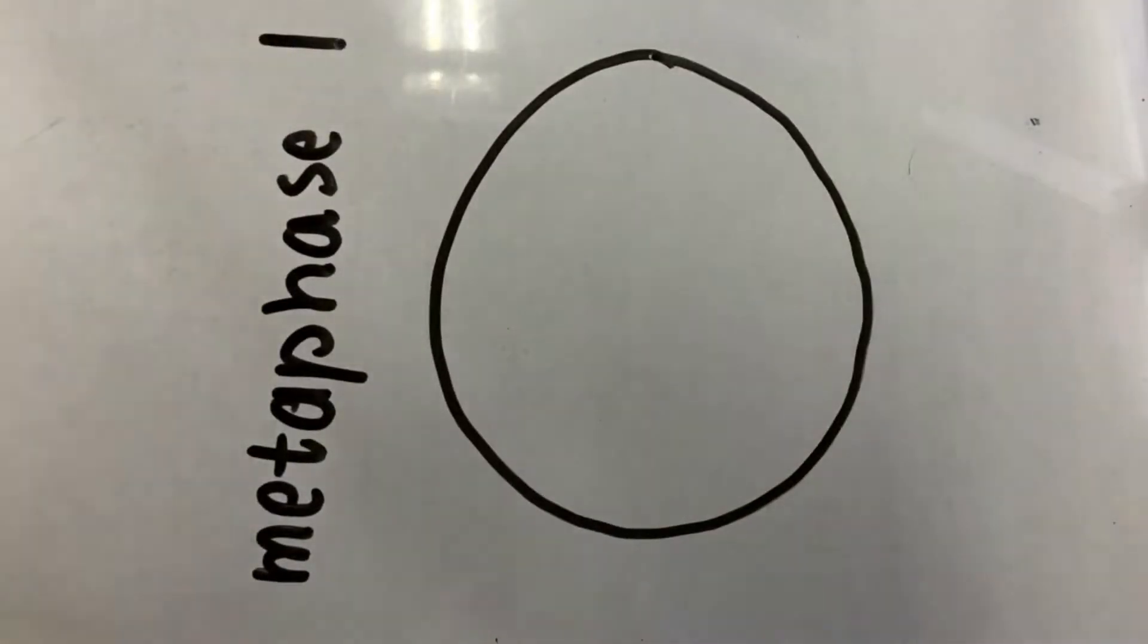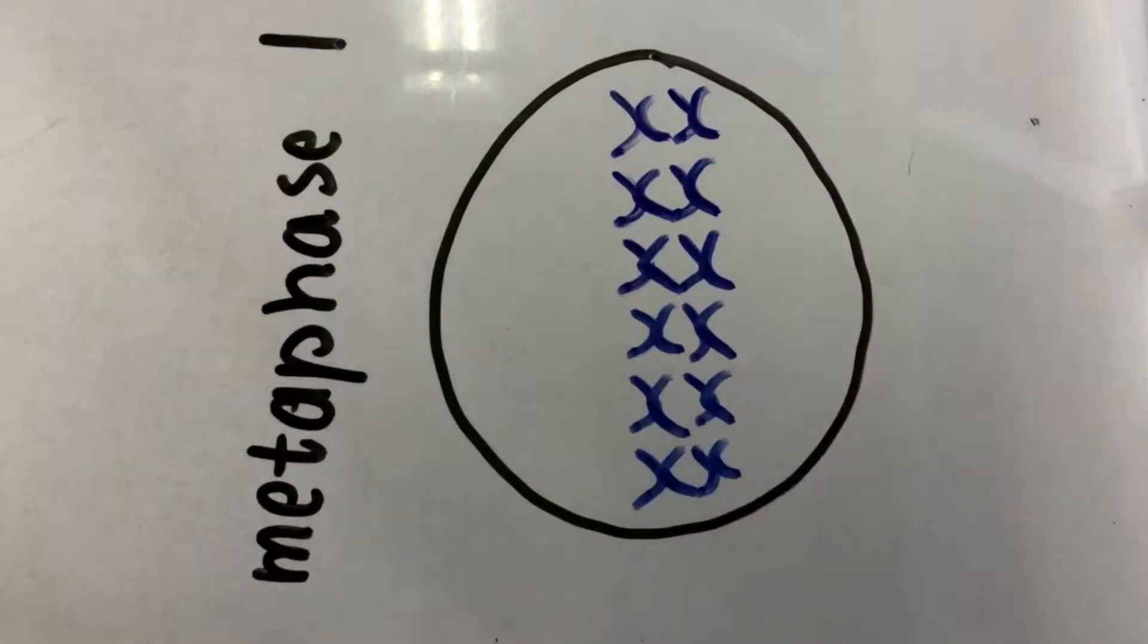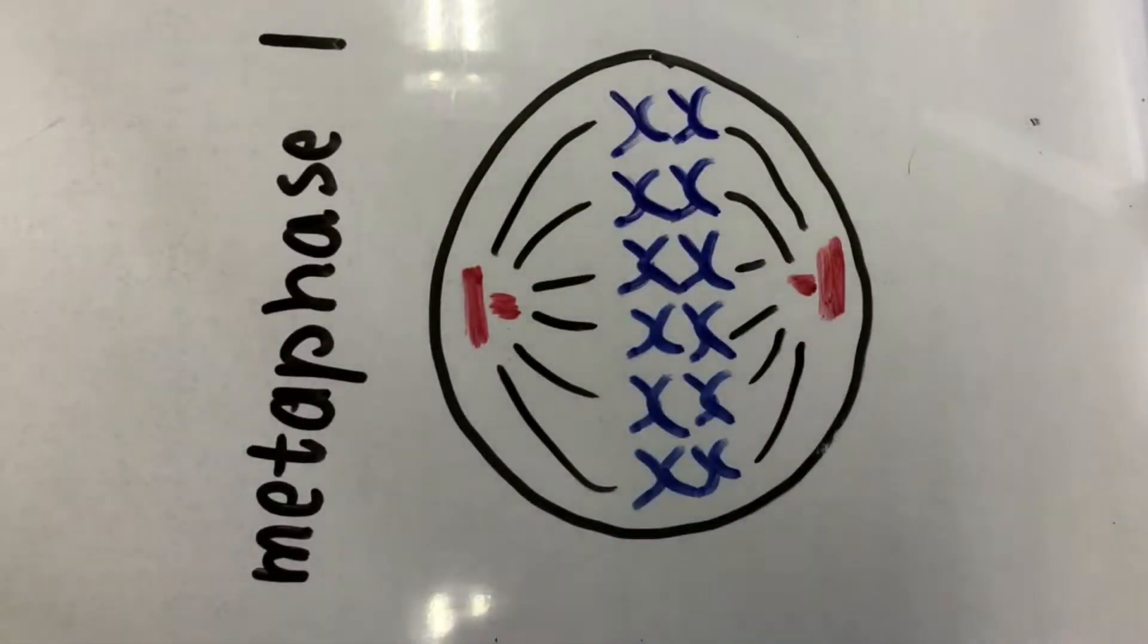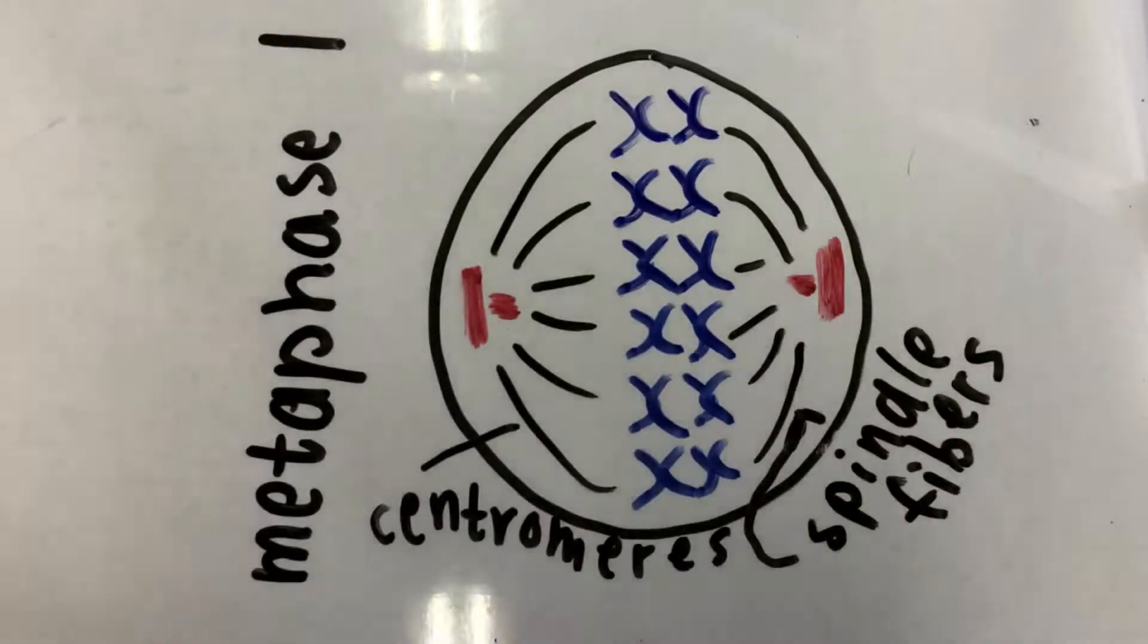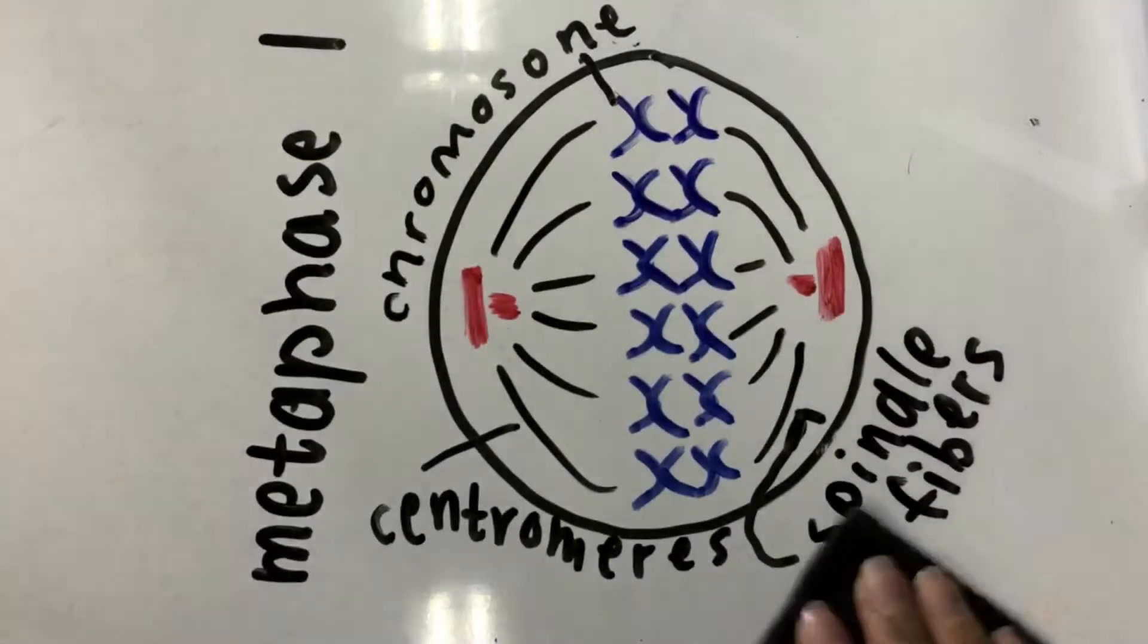The cell then proceeds to metaphase 1. The protein ropes called microtubules then attach to the chromosomes. The chromosomes are moved by motor proteins and form a line along the equator of the cell.